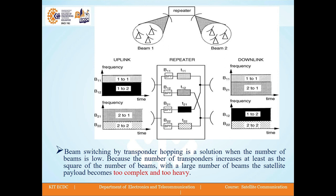Beam switching by transponder hopping is a solution when the number of beams is low, because the number of transponders increases at least as the square of the number of beams. With a large number of beams, the satellite payload becomes too complex and too heavy. Hence, beam switching by transponder hopping is used when the number of beams is low.